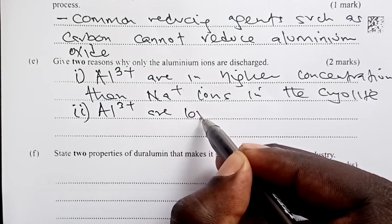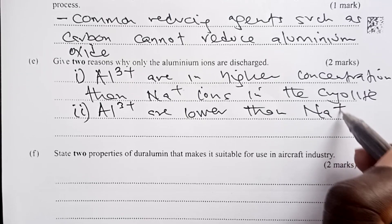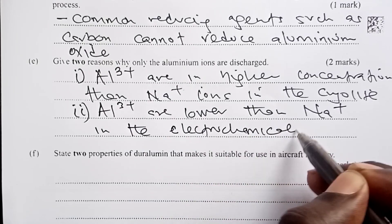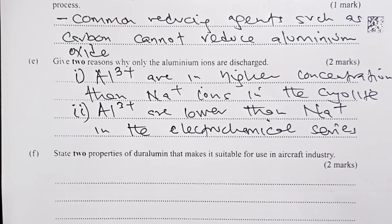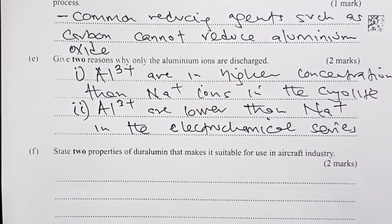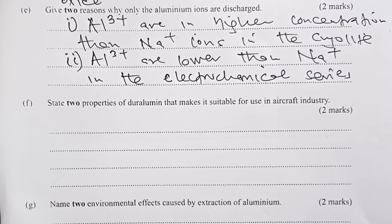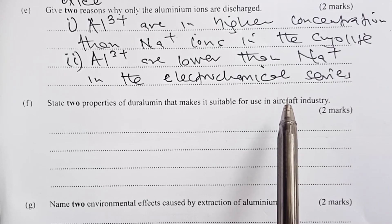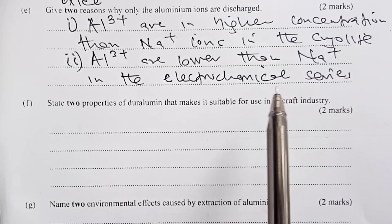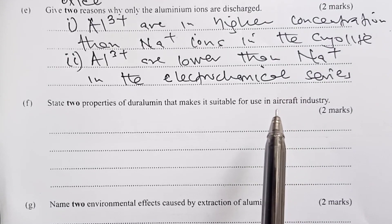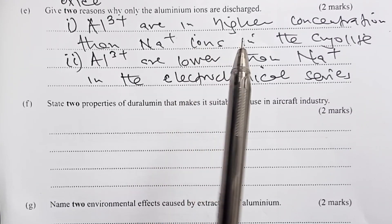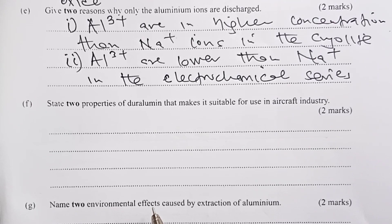Because cryolite introduces sodium ions in our electrolyte. The second reason why we discharge aluminum ions is that aluminum ions are lower. They are lower than sodium ions in the electrochemical series. Those who've done electrochemistry, we know that there are three factors that affect what we call preferential discharge of ions. One, being position of ions in the electrochemical series. The higher the metal ion in the series, the more difficult it is to be discharged. Second factor we look at is concentration, which has come out very clearly in our reason number one. And then we also have a third factor that we call nature of electrode.